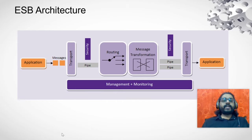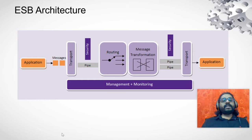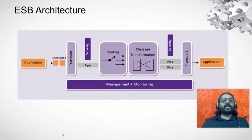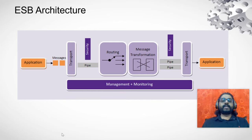Getting into detail about this architecture: any message coming into the ESB profile first hits the transport layer. The transport layer consists of all the protocols like HTTP, HTTPS, or if we have to define our own custom transport, that can also be done. After the transport layer is processed, it goes through a security layer, which validates SSL certificates or any tokens that are involved.